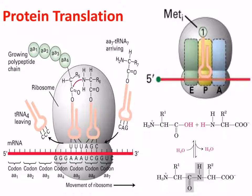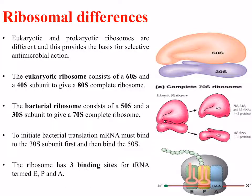This process appears quite similar to eukaryotic or human cells; however, there are some subtle differences which allow us to target this particular process. These differences include a difference in the overall structure of the ribosomes. The eukaryotic ribosome contains a 60S and a 40S subunit to give an 80S complete ribosome. Whereas the bacterial ribosome consists of a 50S and a 30S combining to give a 70S complete ribosome, and bacterial translation must commence with the binding of mRNA to the 30S subunit and then the 50S.